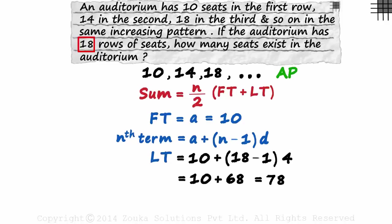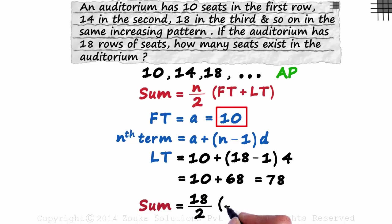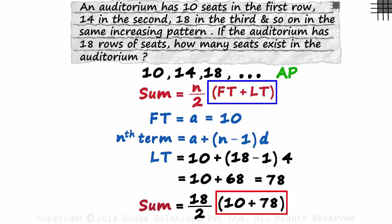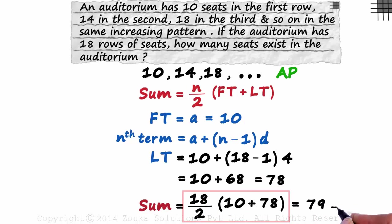We have N, the first term and the last term. With this, we can easily find the sum. N over 2 will be 18 over 2. The first term is 10 and the last one is 78. This bracket will equal 10 plus 78. Solving this gives us 792. There are 792 seats in the auditorium.